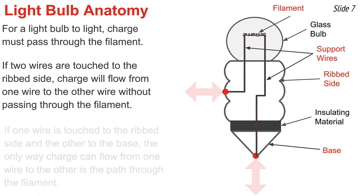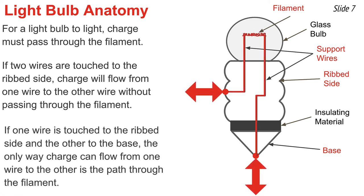If you want the light bulb to light, you have to touch one wire to the rib side and the other wire to the bottom base. Then charge that enters the rib side will travel up through the support wire, through the filament, down the second support wire, and out the bottom base, or vice versa.